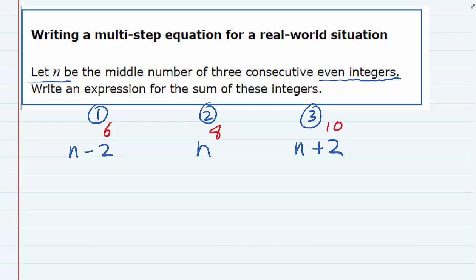For this example, we don't know what n is, we just know that it's even. These numbers were just guesses to see if our setup was correct. The expression we're asked to write is the sum of these integers, which means we're going to have to add these up.